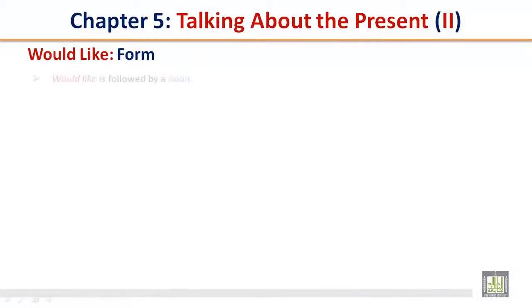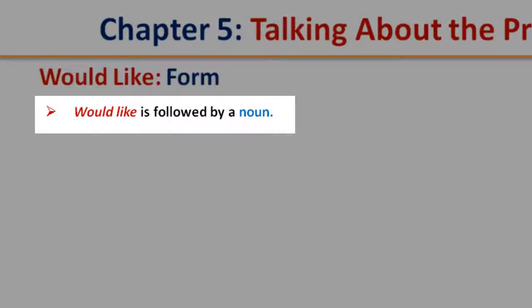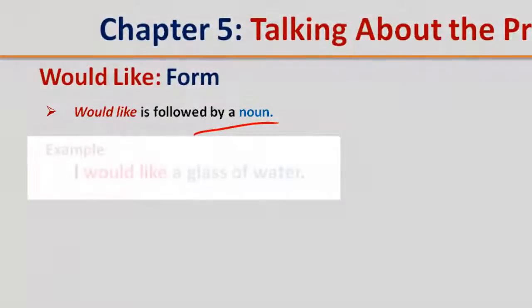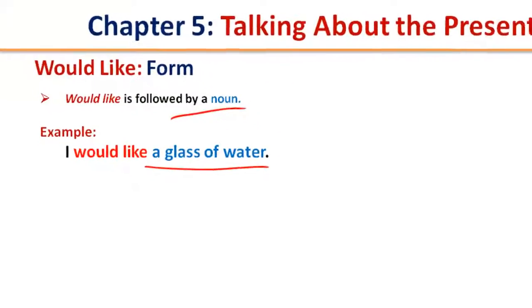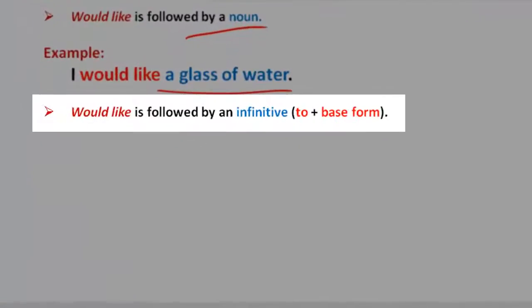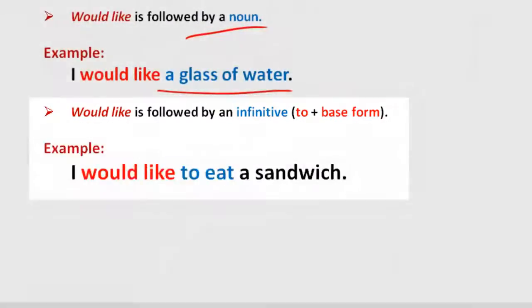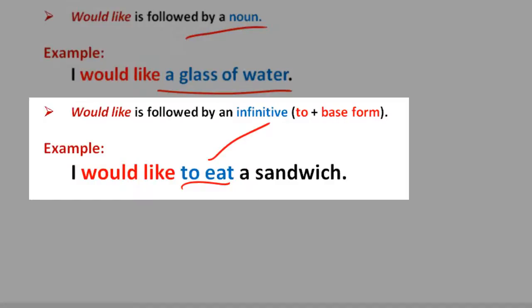Would like form: would like is followed by a noun. Example: I would like a glass of water. Would like is followed by an infinitive, which is to plus base form. I would like to eat a sandwich.